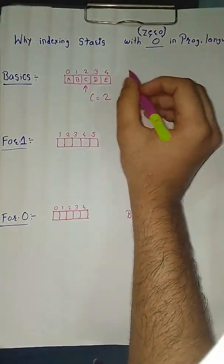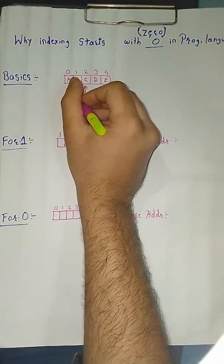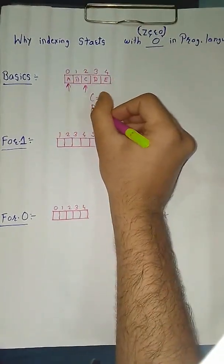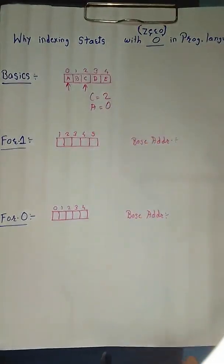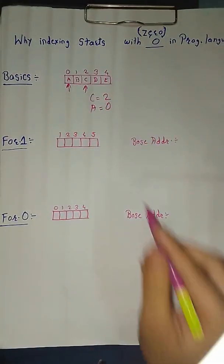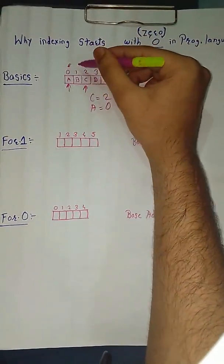If someone says you to access the a element, then you will say that the indexing of a is 0. But one question commonly arises in mind: why does indexing start with 0? Why not 1?